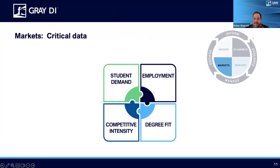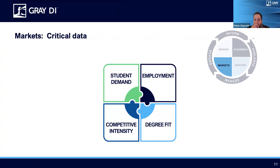Today we'll be covering information from the markets part of a program evaluation system. Specifically, we track four broad categories: student demand, employment, competitive intensity, and degree fit. Today we'll be looking at student demand and employment, and some specific subsets of the data sources included in those categories.